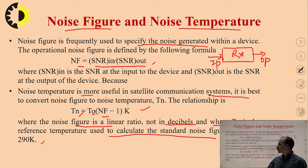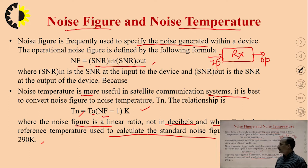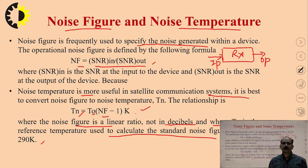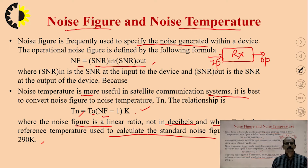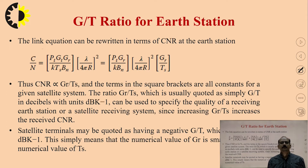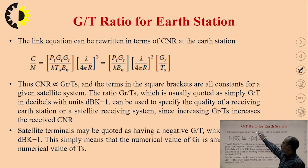That calculation is quite straightforward, but always remember that this calculation is in Kelvin. If you have a value in degrees, you should first convert it to Kelvin before solving the numerical. After covering noise figure and noise temperature, we are going to find out the G/T ratio for the earth station.